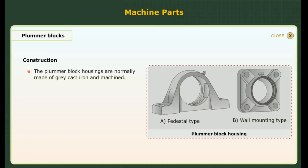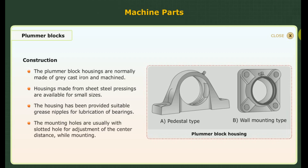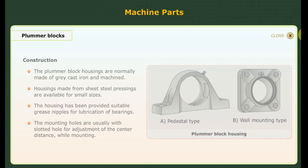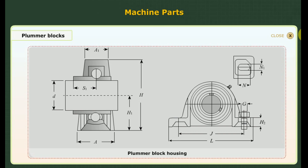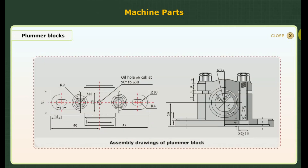Construction: the plumber block housings are normally made of grey cast iron and machined. Housings made from sheet steel pressings are available for small sizes. The housing is provided with suitable grease nipples for lubrication of bearings. The mounting holes are usually slotted for adjustment of the centre distance while mounting. The figure shows a standard plumber block with an anti-friction bearing. The table gives the standard dimensions for plumber blocks for shaft diameter phi 45 and phi 50. An assembly drawing of a plumber block is given here.